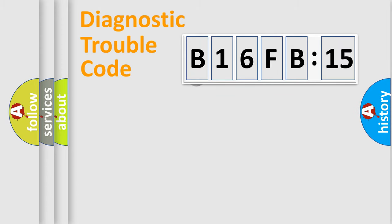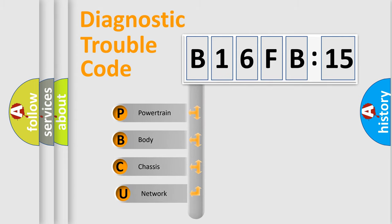Powertrain. Body. Chassis. Network. This distribution is defined in the first character code.